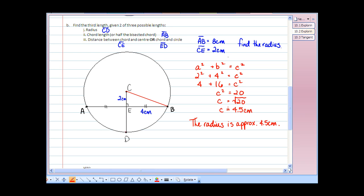And we can therefore also figure out that DE would be equal to the radius, or CD, minus CE. So, the radius CD being 4.5 centimeters, minus the distance between the center to the chord, 2 centimeters. So, DE would then measure 2.5 centimeters.